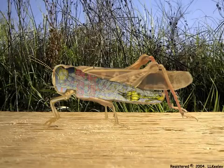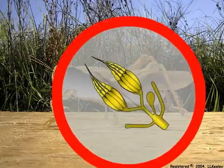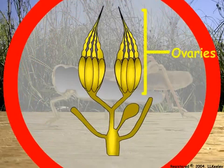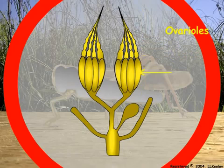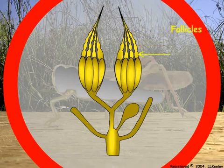Most insects reproduce sexually and lay many eggs. The female reproductive system consists of paired ovaries made up of separate tubules called ovarioles. Ovarioles are divided into chambers called follicles. Each follicle contains an oocyte that is becoming mature by depositing yolk.